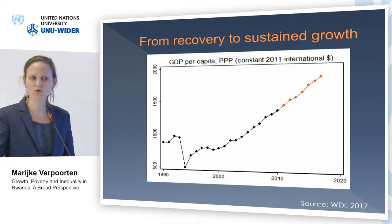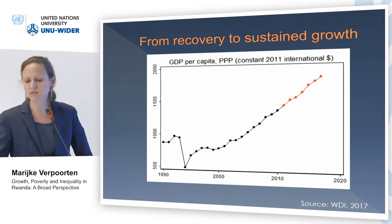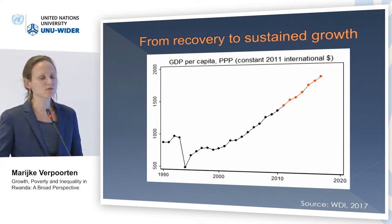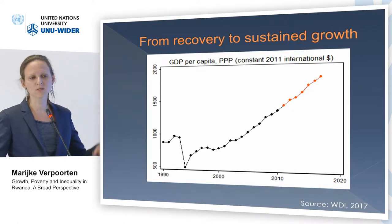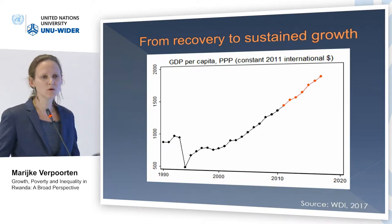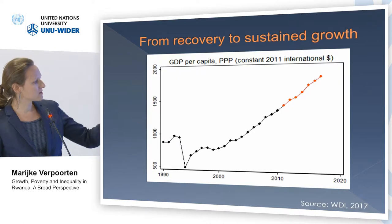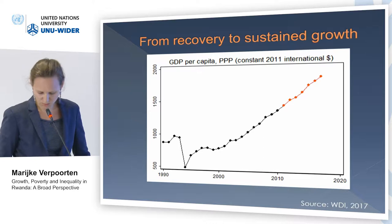The easy part: growth. The black line is what I presented in 2013; the red line is what I added for this presentation. You can see a continued pattern of growth. Rwanda is growing at four to five percent annually — seven percent minus two-and-a-half percent population growth — so four to five percent per capita growth, landing in 2017 at the level of one thousand nine hundred dollars per capita.